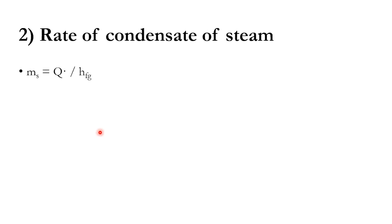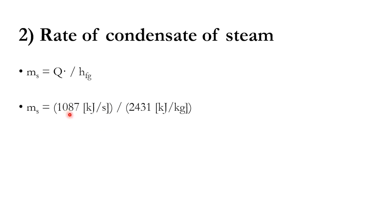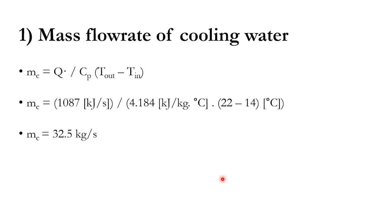For the rate of condensation of steam, since only latent heat is involved: Q = m · h_fg. With Q = 1087 kJ/s and h_fg = 2431 kJ/kg, the condensation rate is 0.45 kg/s. So for 0.45 kg/s condensation of steam, we need 32.5 kg/s of cooling water.